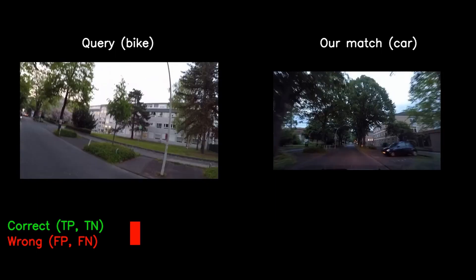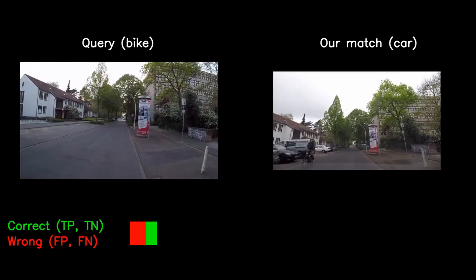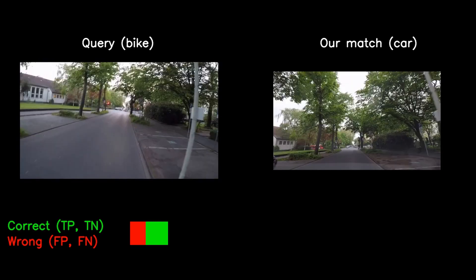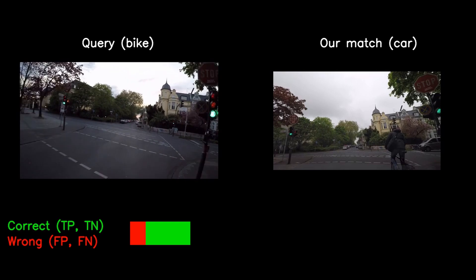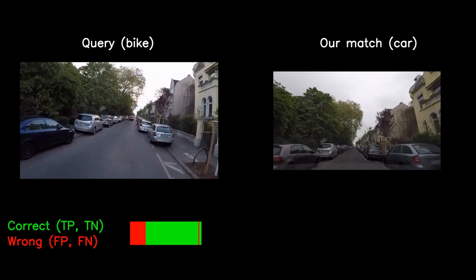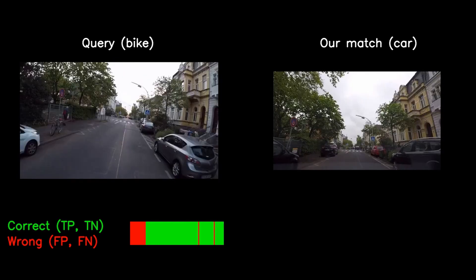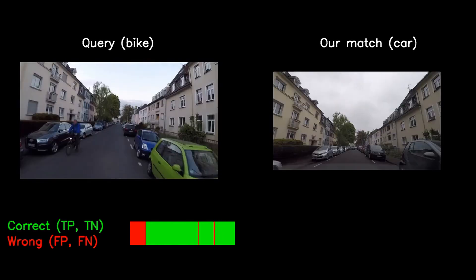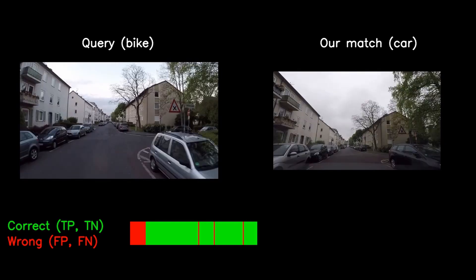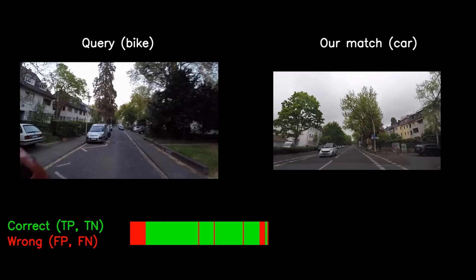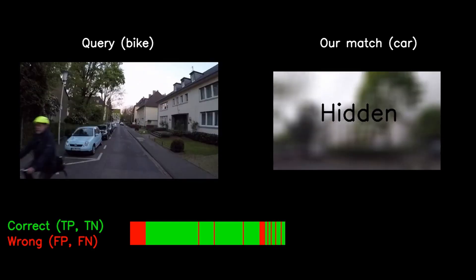In the next experiment we went for a more challenging setup, where the query sequence was collected on the head of a bicyclist and the reference map consists of sequences collected with the car only. As you may see, the video from the bike is more shaky, which changes the viewpoint with respect to the images collected with the car. Whenever our algorithm reports that there is no match found, we mark this decision as hidden in the video, since it corresponds to the search going through a hidden node.